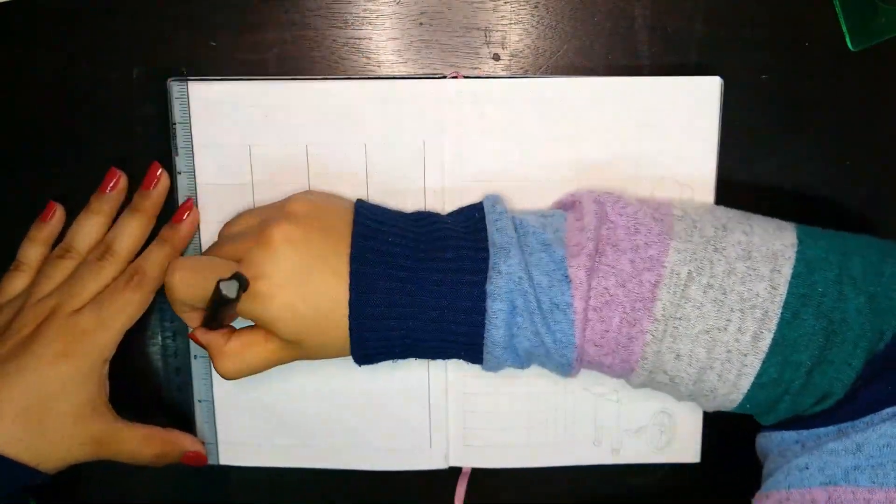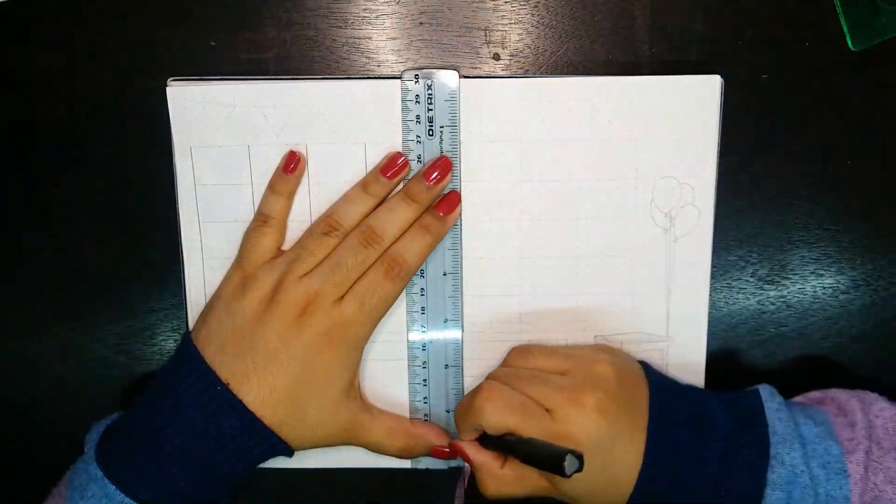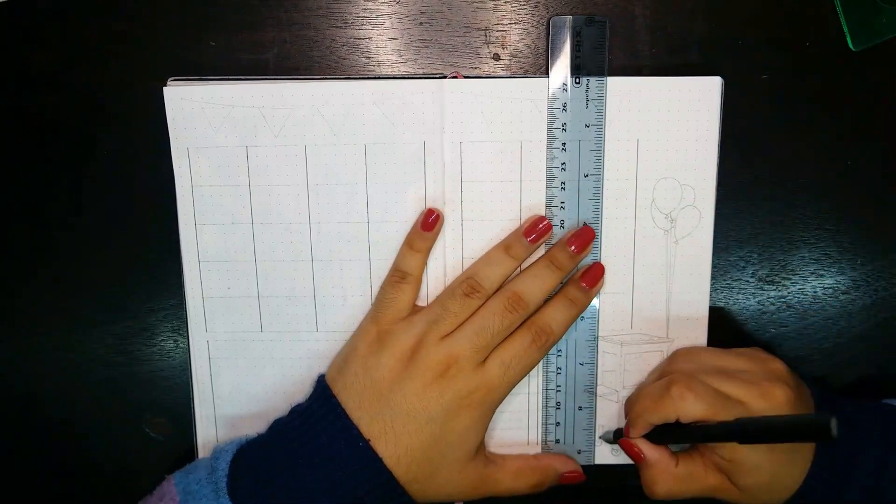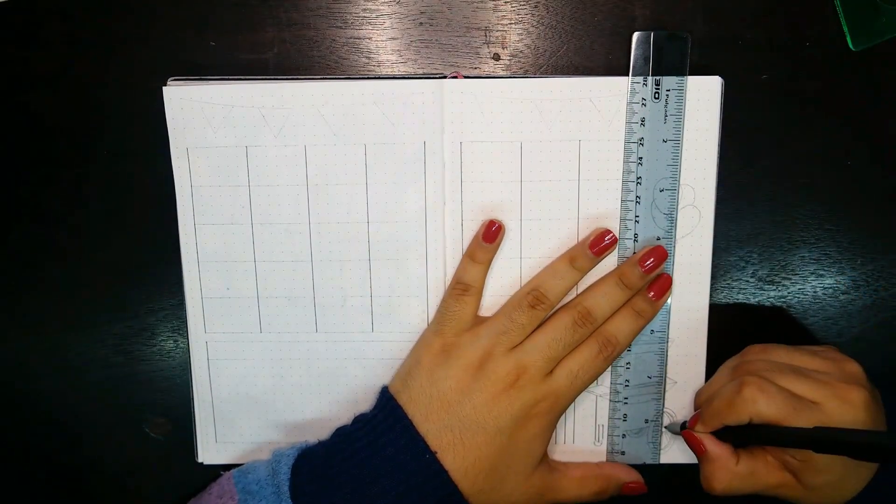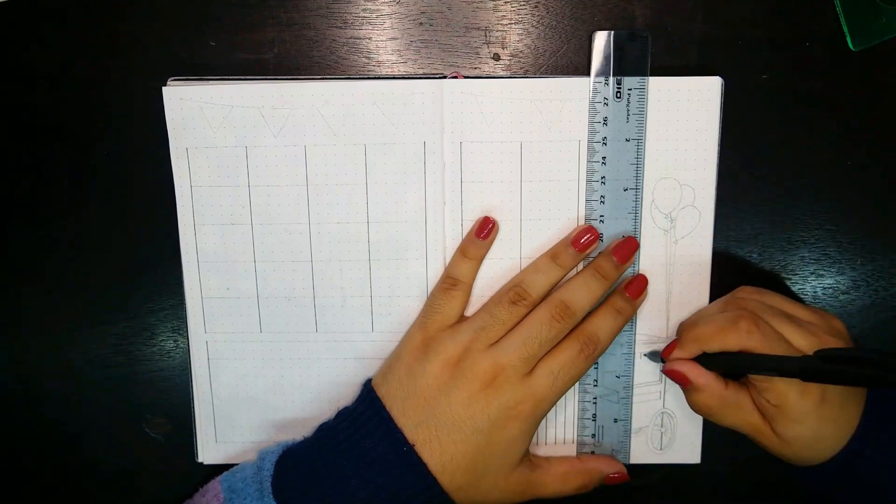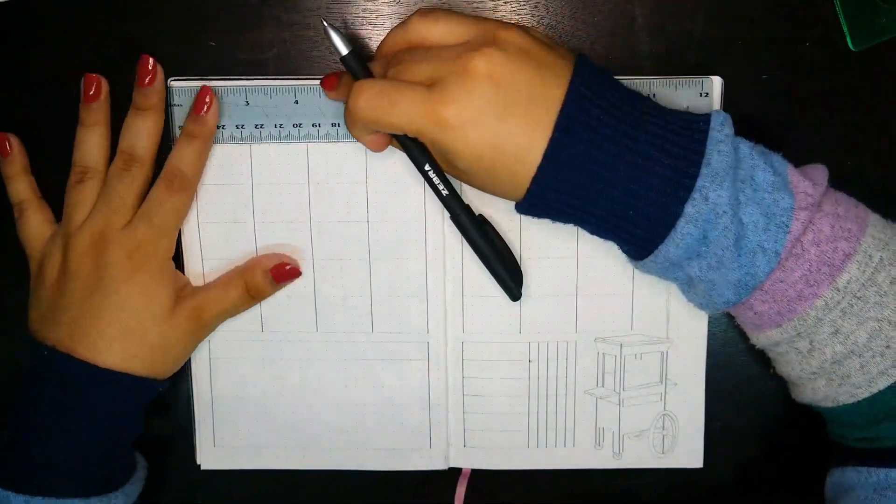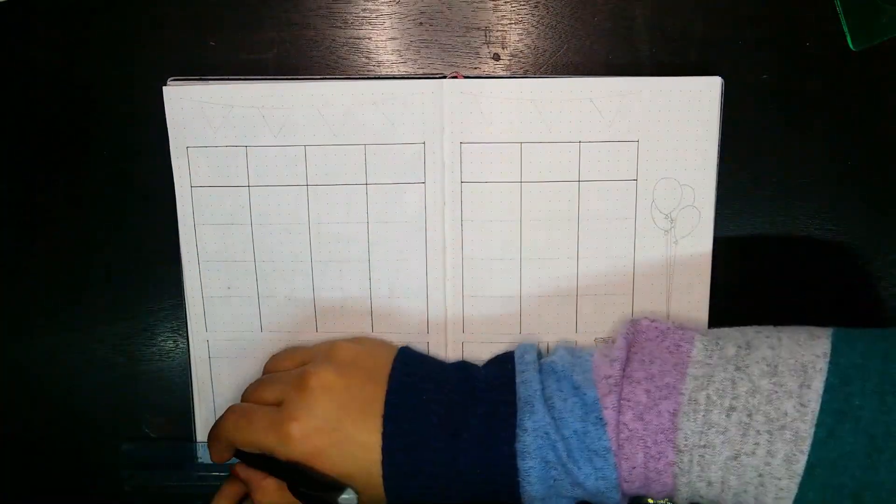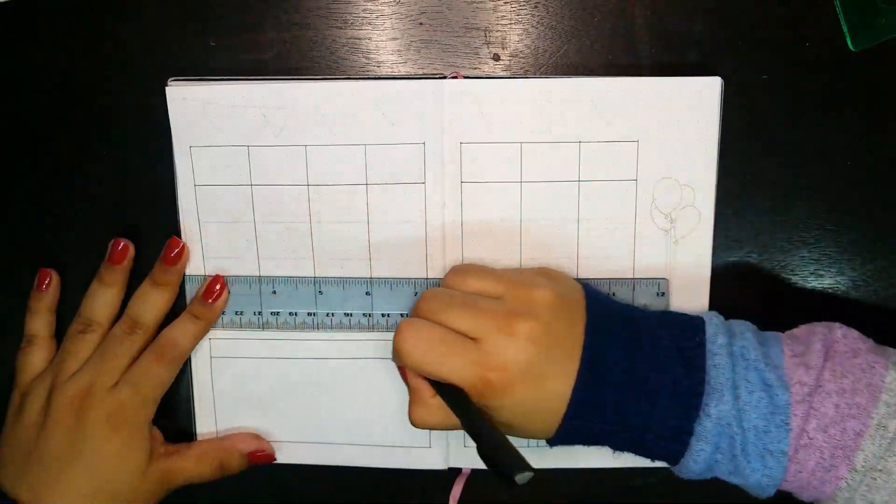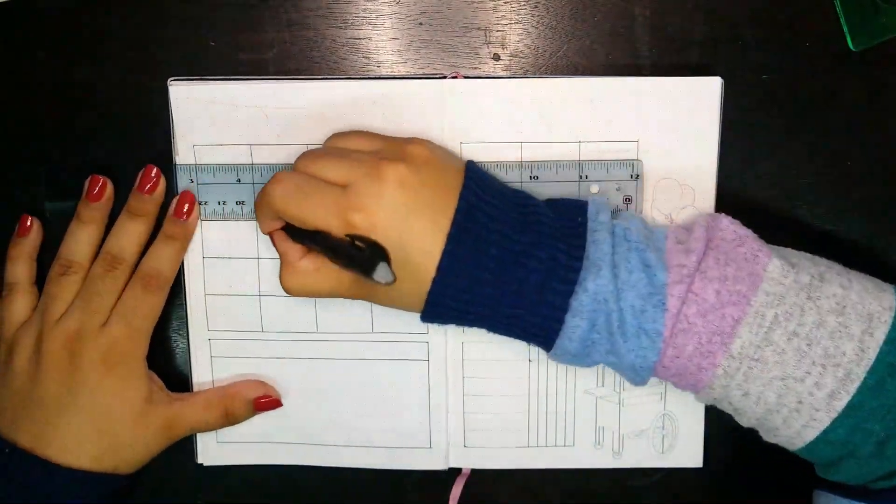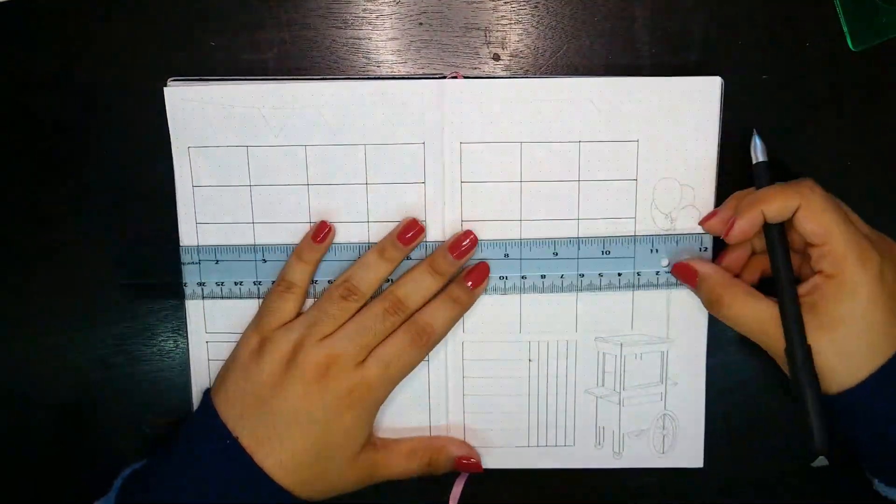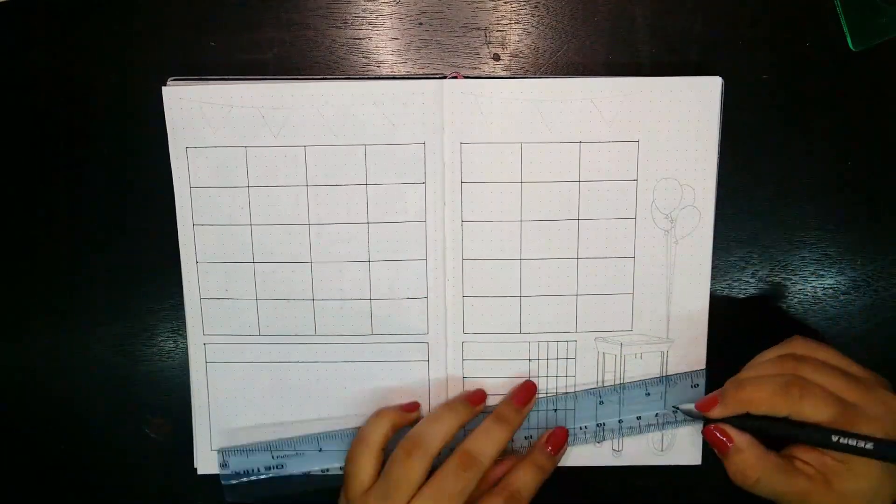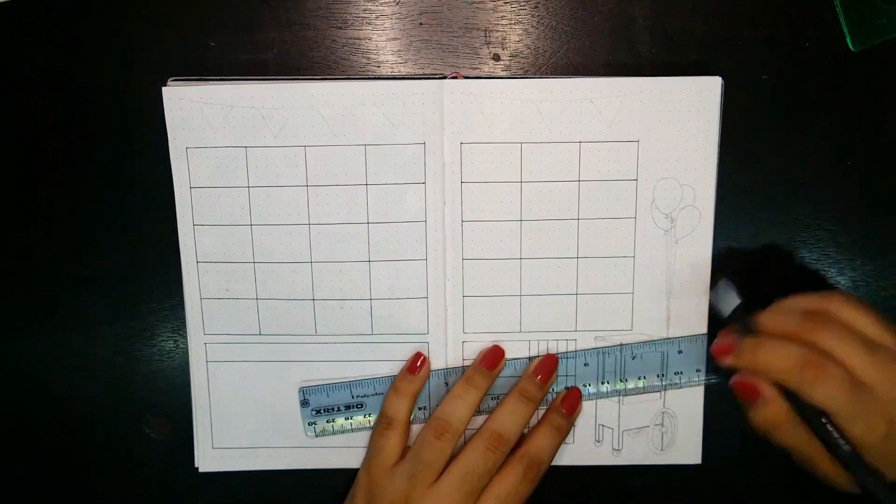We're now moving into the next spread, which is the monthly overview. For more than a few months now, I've had the same three sections on this page: a big boxy calendar, a smaller section for notes, and a weekly task checklist or tracker. Just like before, I started by outlining all these sections with my black gel pen before other details.